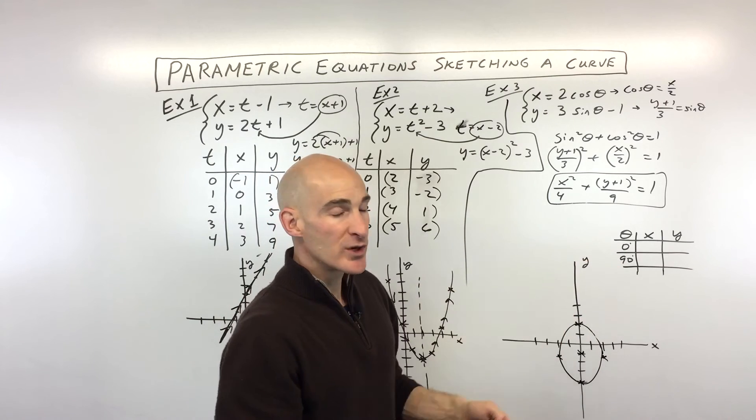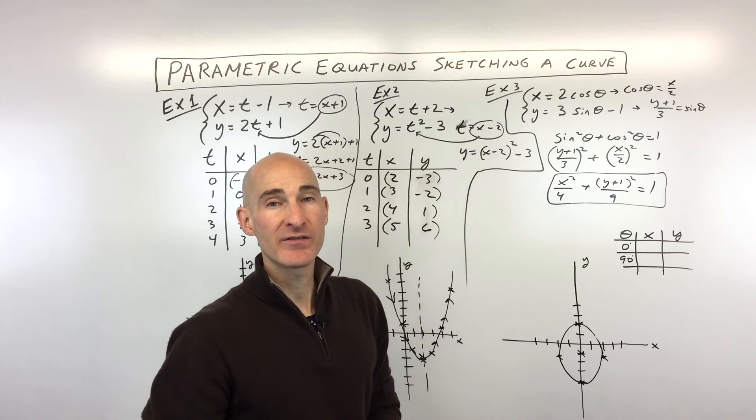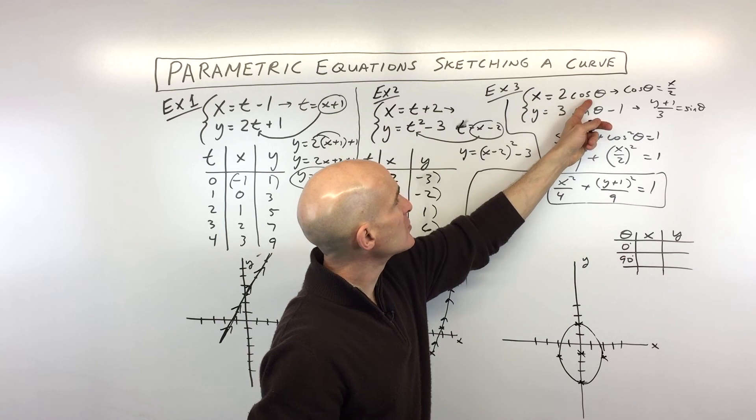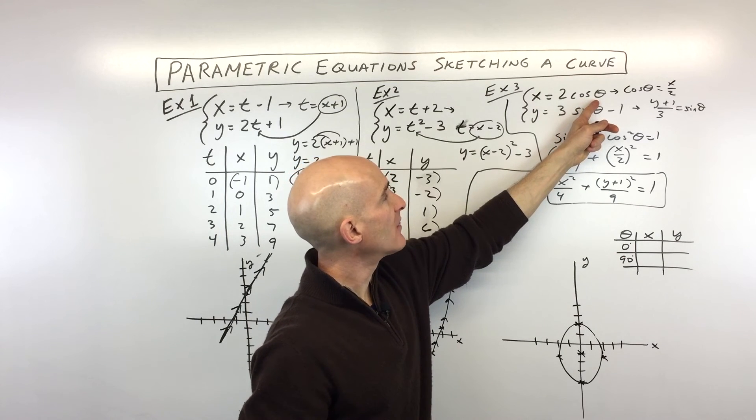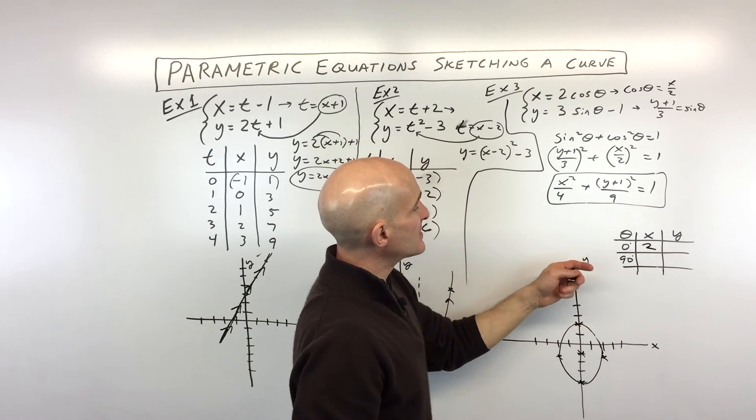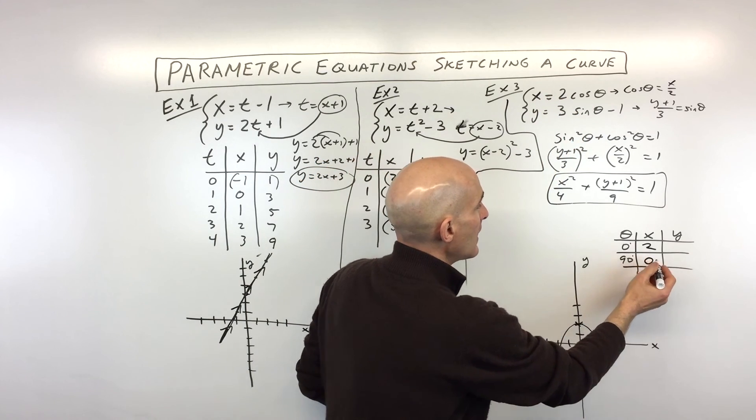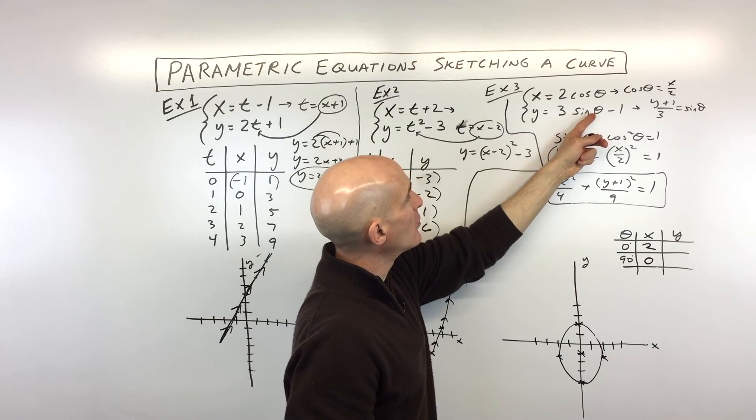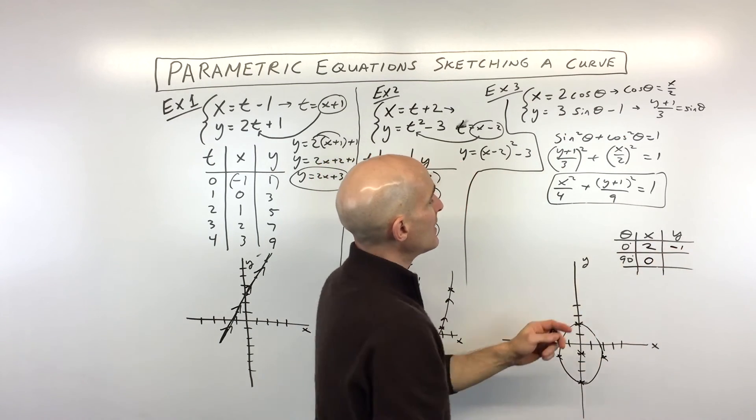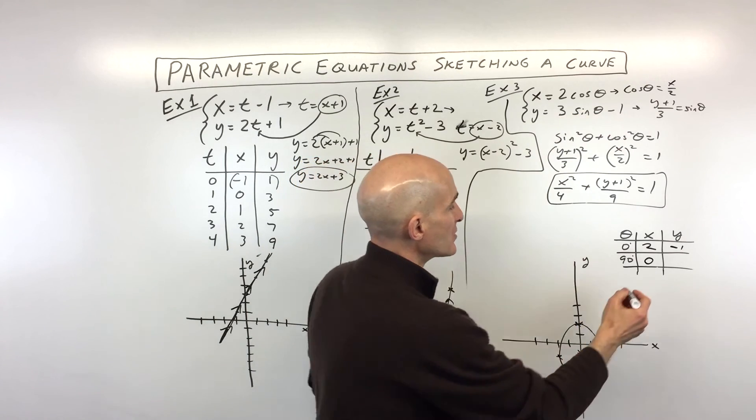But now let's go ahead and get an idea which way is this particle or object traveling with increasing values of theta. So let's put in zero. We get cosine of zero is one, from our unit circle times two, which is two. And then say we put in 90. What's the cosine of 90? That's zero times two is still zero. And then for y, if we put in zero, sine of zero is zero times three is zero minus one is negative one. And if we put in 90, the sine of 90 we know is one times three is three minus one is two.